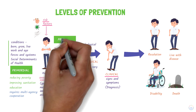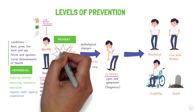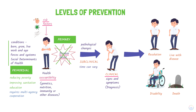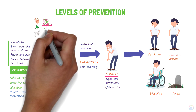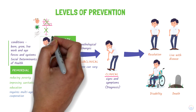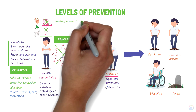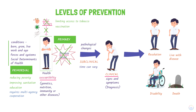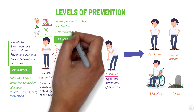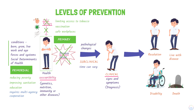The goal of primary prevention is to prevent the onset of disease. It does this by reducing or eliminating risk factors, reducing exposure, or developing resistance to risk factors. For example, limiting access to tobacco products, vaccination to protect against infectious diseases, and ensuring safe workplaces to minimize exposure to hazardous agents such as asbestos.